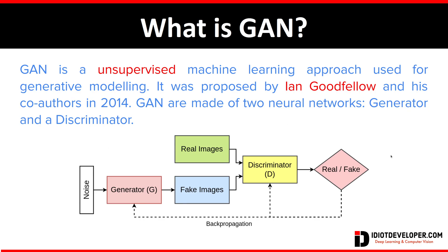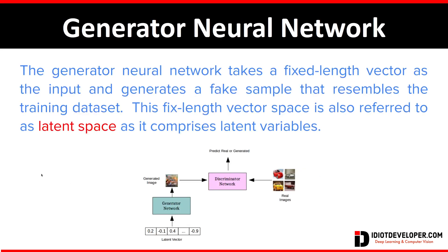Here you can see a basic block diagram of GAN. It consists of two components: the generator part and the discriminator part. A generator neural network takes a fixed-length vector as the input and generates a fake sample that resembles the training dataset.